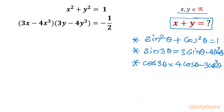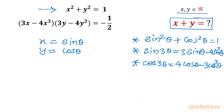Now let me write our substitution. If we substitute x equals sin theta and y equals cos theta, then equation number 1 becomes sin squared theta plus cos squared theta equals 1. We can use the very first identity to verify it is true.